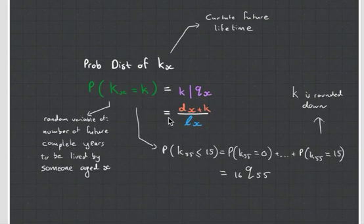If we look at the probability distribution of KX, remember KX from subject CT4 is your curtate future lifetime, this guy is just going to be equal to K deferred QX, so the probability that someone aged X lives for five years is equal to QX that they die within one year deferred by five years. But that can be very nicely represented by the life table functions of DX plus K over LX.